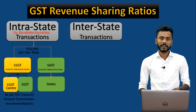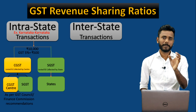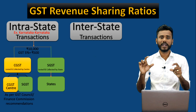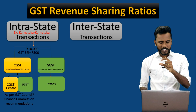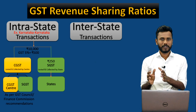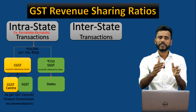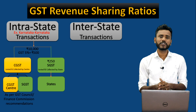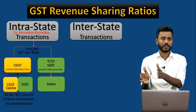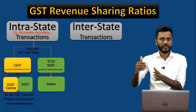Assume the total supply value is 10,000 and the GST rate is 5 percent. For understanding, the supply value is 10,000 and the GST percentage is 5, so the total tax is 500 rupees. Out of these 500 rupees, 2.5 percent goes to the center and 2.5 percent goes to the state — that means 250 rupees is given to the center as CGST and 250 rupees is given to the state as SGST.